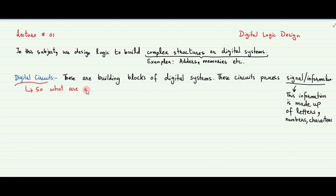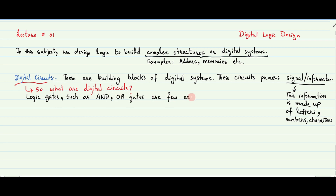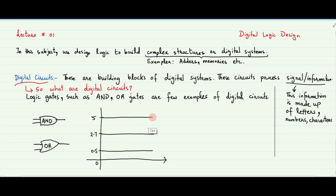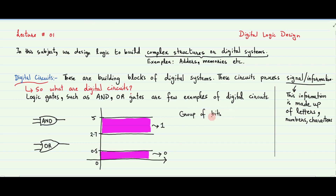So what exactly are digital circuits? Digital circuits include logic gates such as AND and OR gates. These circuits handle discrete voltage levels which are represented by 0 and 1. A single bit such as 0 or 1 does not carry much information. As a result, a group of bits can be used to describe numbers, letters, and characters that are part of the signal or information being processed by digital systems.